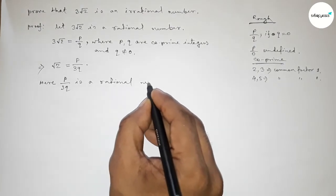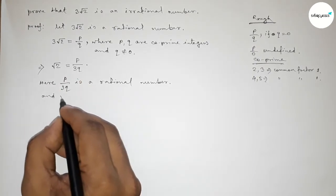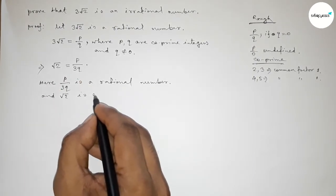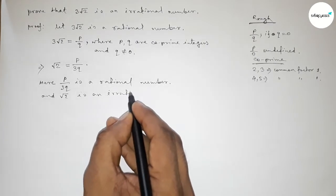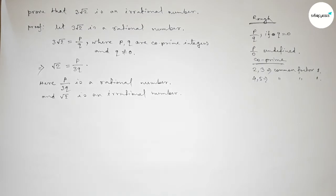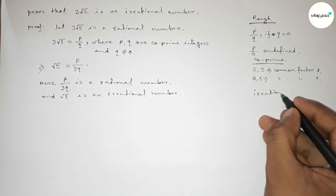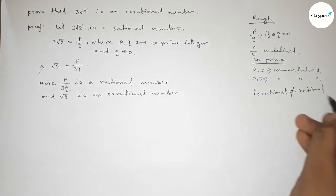And here root 2, and root 2 is an irrational number. So this is impossible because a rational number does not equal an irrational number. An irrational number does not equal a rational number.